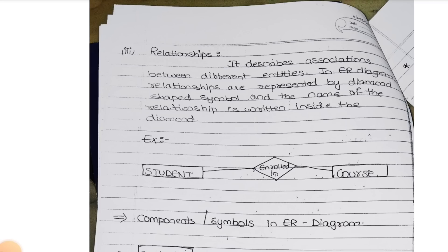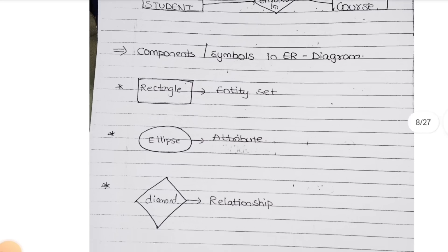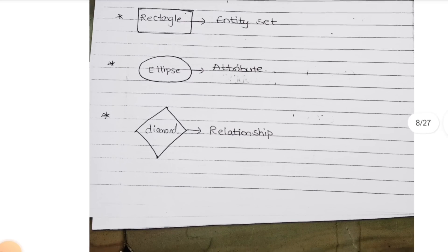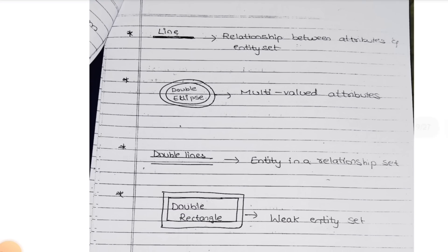You can use a rectangle - that is called entity set. Ellipse - it is an oval shape - that represents attribute. Diamond shape - you can use for relationship. Line - for connection. Double ellipse, double lines, double rectangle are also different types of symbols used in the ER model.